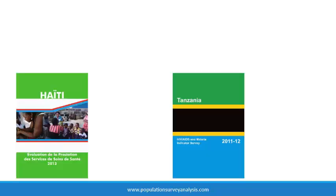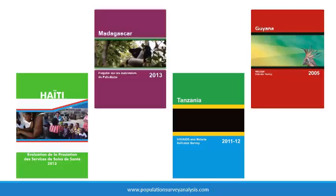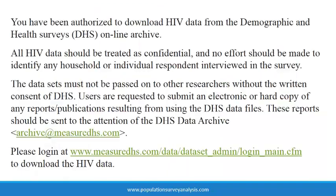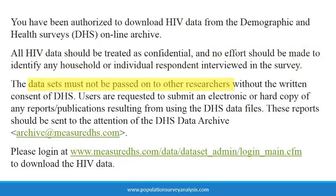The Demographic and Health Surveys, DHSs, are free, public data sets, though you must register with MeasureDHS and submit a request before access to DHS data is granted. This data request system ensures that all users understand and agree to basic data usage ethics standards. You agree that no effort will be made to identify any households or individuals sampled, and you will not pass along the data to others without consent of the DHS.